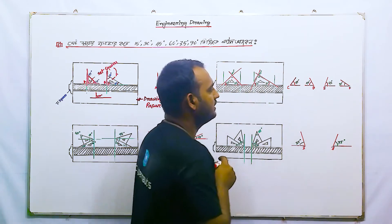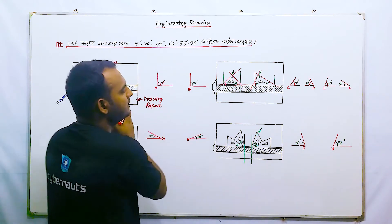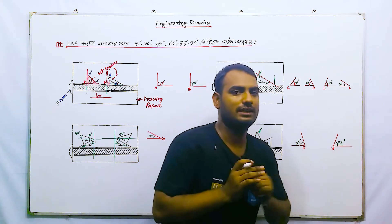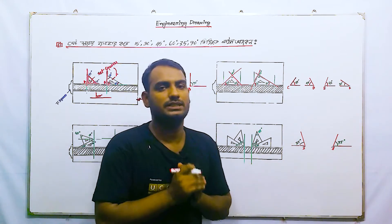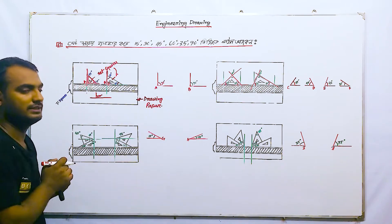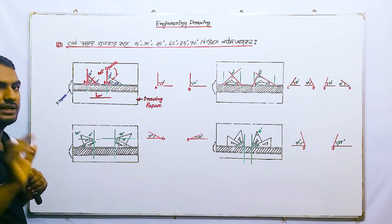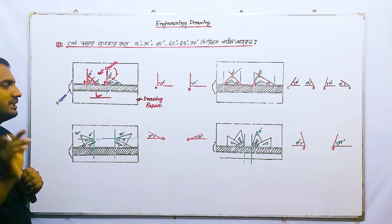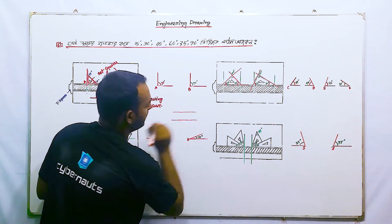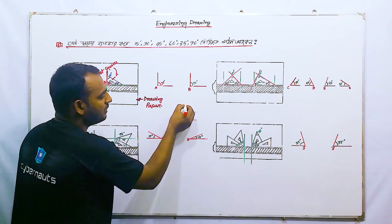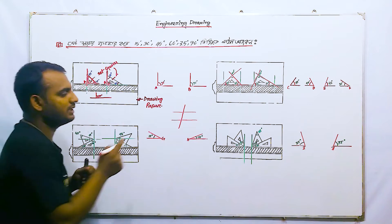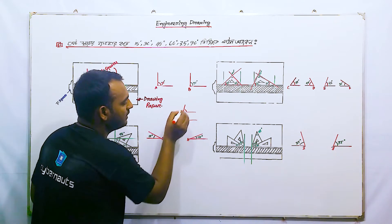Now we can find the Third Figure. If you want to see this, you can find it. Now we can find parallel lines. Now let's see the two linear lines.